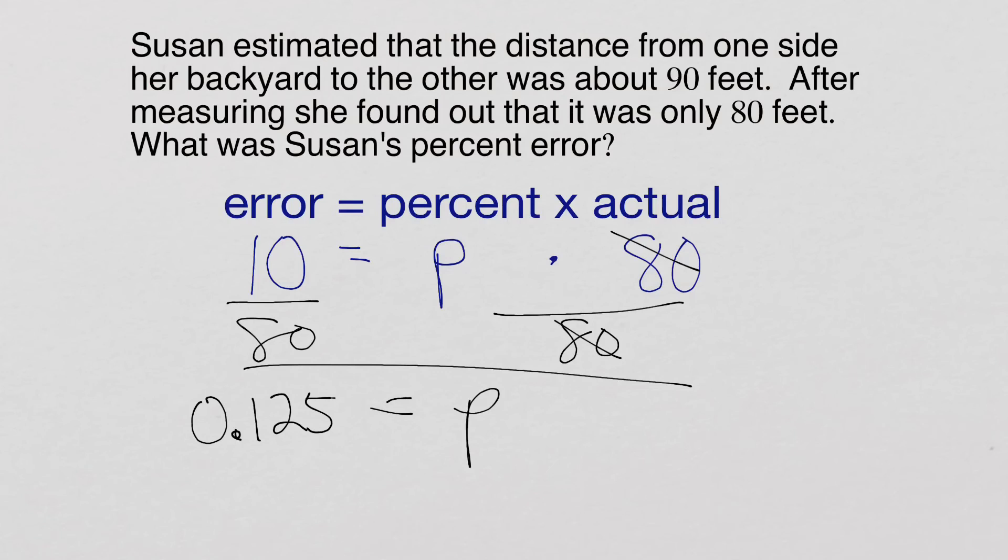Then we'll just go ahead and move that decimal over two spots. My answer is 12.5 percent. So she had a 12.5 percent error.